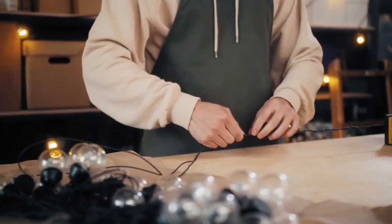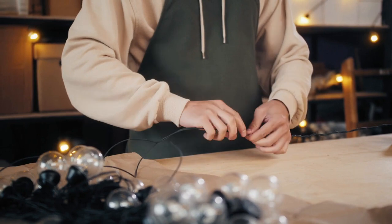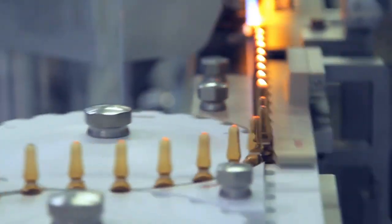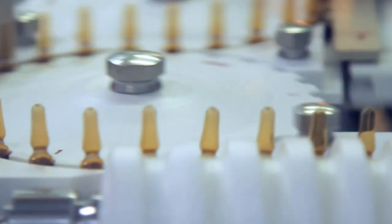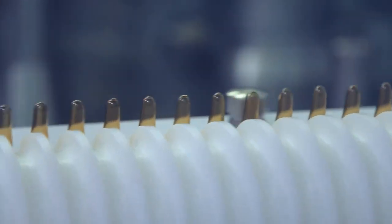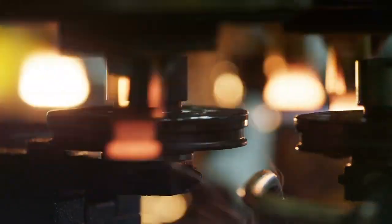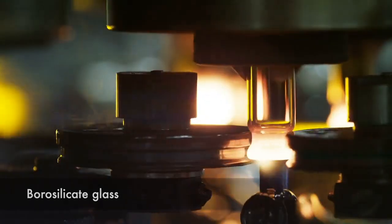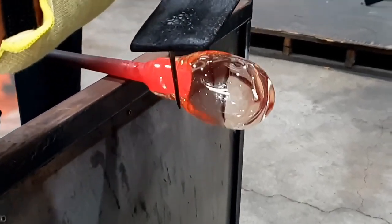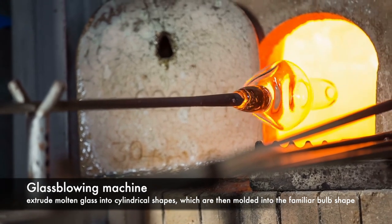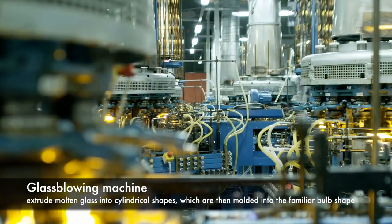Today, the manufacturing of lightbulbs is a highly sophisticated process that combines advanced technology with precise craftsmanship. Modern factories are equipped with state-of-the-art machinery and automation systems to streamline production and ensure consistent quality. The process begins with the production of the bulb itself, which is typically made from borosilicate glass due to its thermal resistance and transparency. Glass-blowing machines extrude molten glass into cylindrical shapes, which are then molded into the familiar bulb shape. The bulbs are then annealed to relieve internal stresses and strengthen the glass.